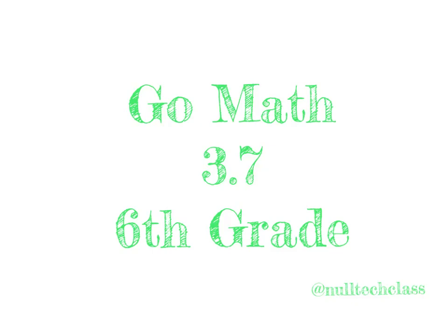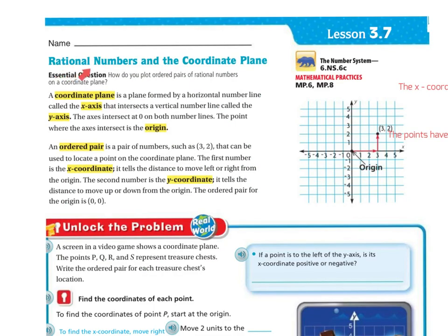Good morning. Today's lesson is 3.7, rational numbers and coordinate plane. Our essential question: how do you plot ordered pairs of rational numbers on a coordinate plane?